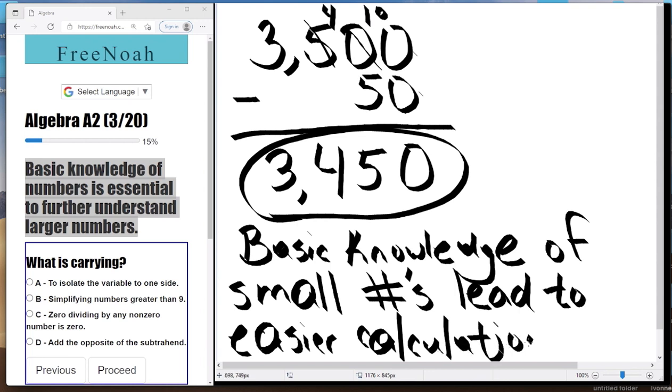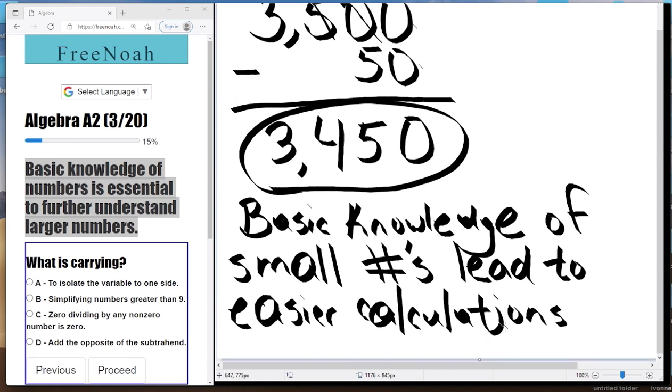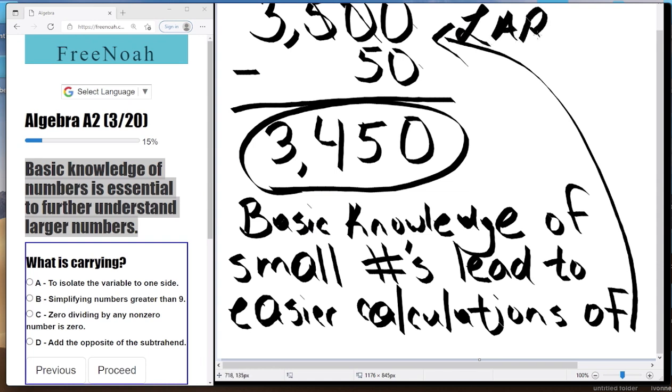Instead of us counting all the way to 3,500 and saying 3,499, 3,489, we were able to make a quicker and easier calculation and still come out with the correct answer.